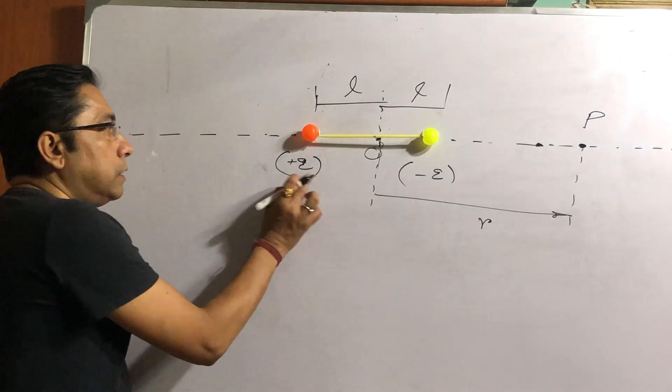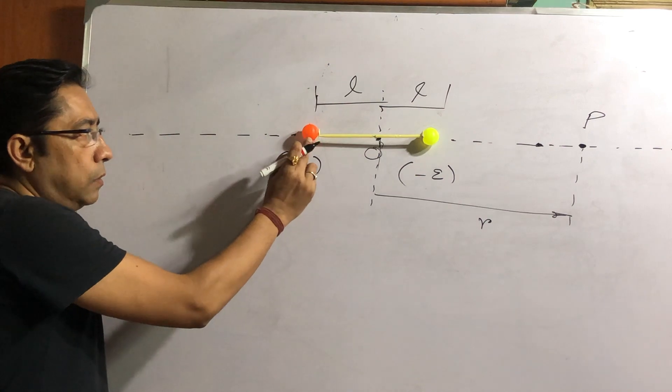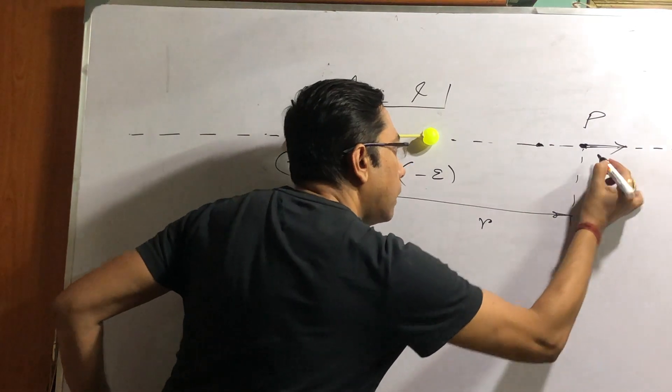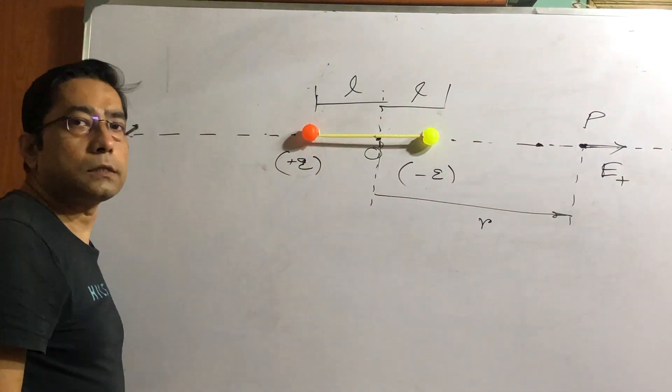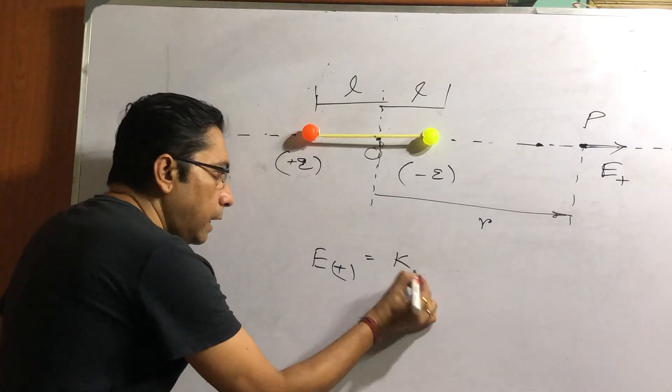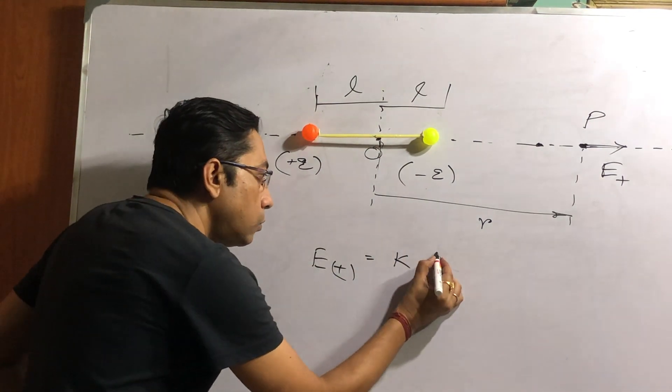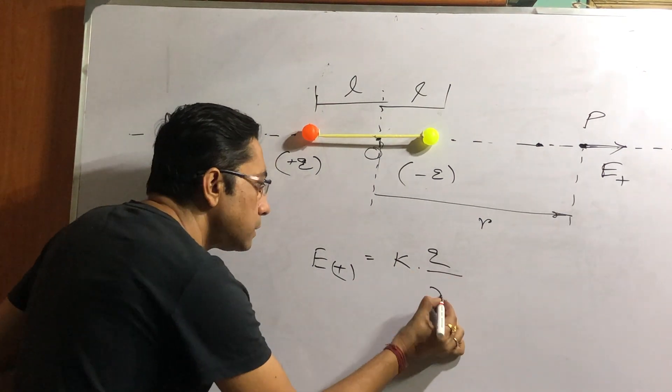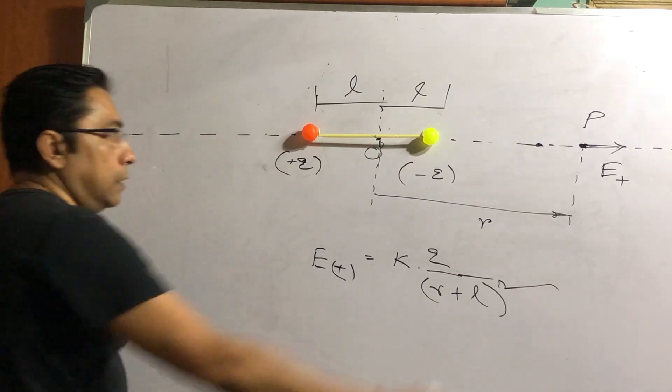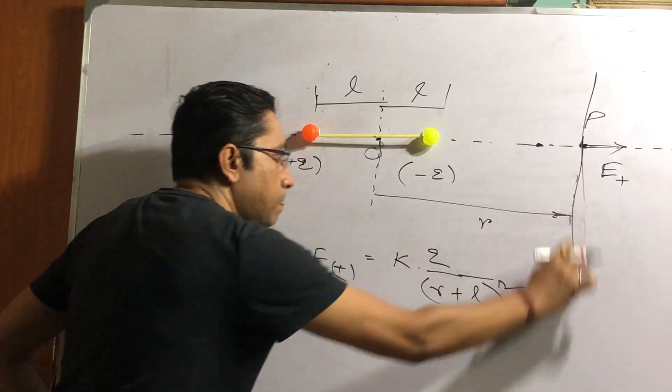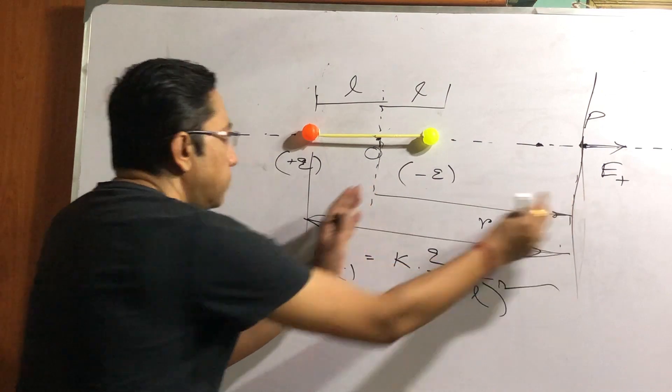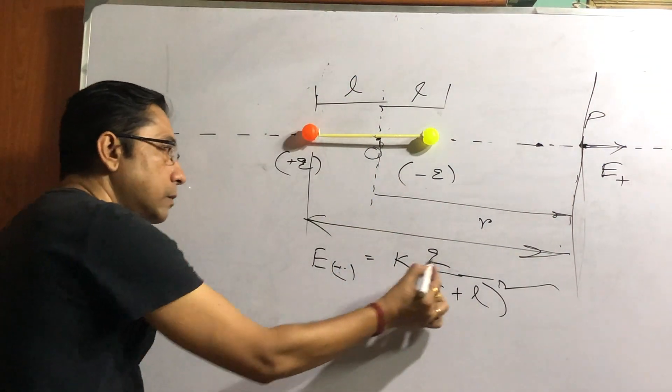Now electric field due to this positive charge, orange ball, positive charge, away. And just now we learnt the formula. It would be away and we denote it by E plus. That means electric field due to the plus charge. So E plus would be given by K, that means 1 by 4πε₀, Q its magnitude, divided by distance square. The distance of point P from the plus charge is R plus L. So KQ by distance square.